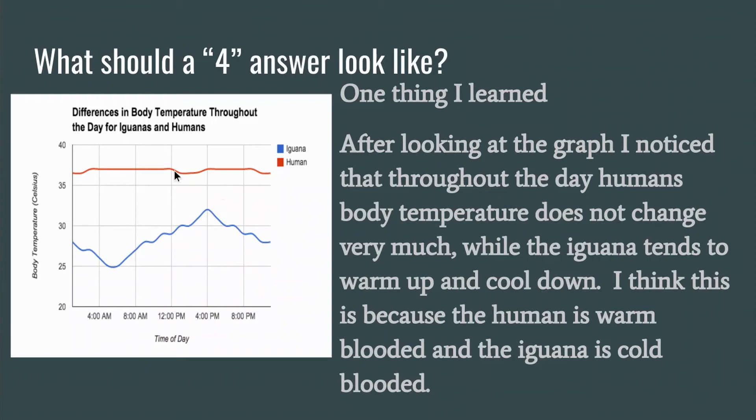So I've addressed both the line about humans and the line about iguanas. I've related that I understand the change in the direction or the height of each line represents a change in body temperature. And then I provided a hypothesis or a potential reason for why the lines look different between humans and iguanas.